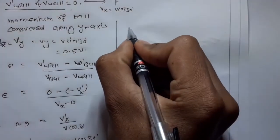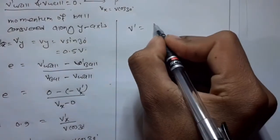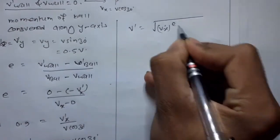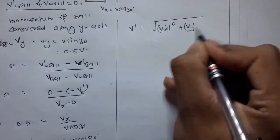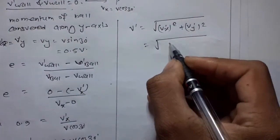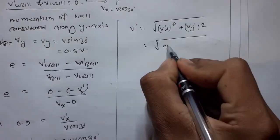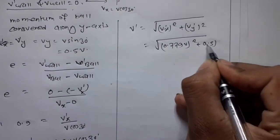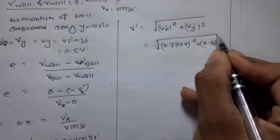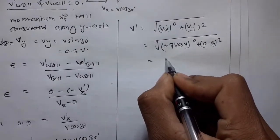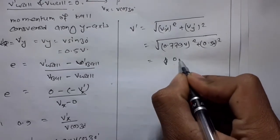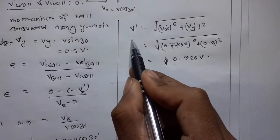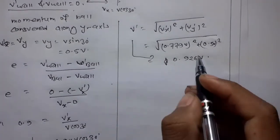Now the velocity v' is the square root of (v'_x)² + (v'_y)², which equals √((0.779v)² + (0.5v)²) = 0.926v. So the final velocity of the ball is 0.926v.